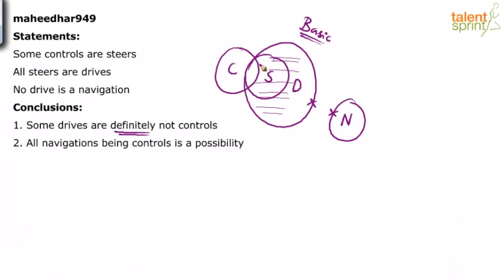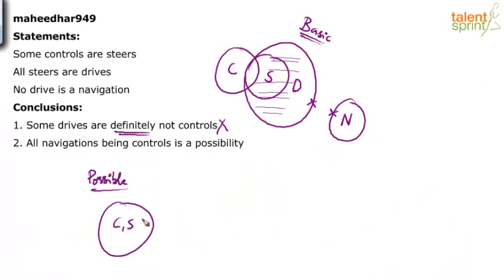No, it will not always be true. If you have practiced some questions, you would know this is a wrong conclusion even without drawing the diagram. How do we say it's wrong? I am redrawing the Venn diagram as a possible case. Some controls are steers can be drawn with controls and steers as the same circle. Then all steers are drives.